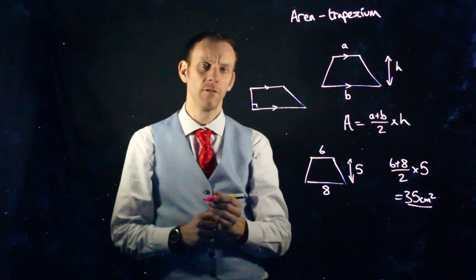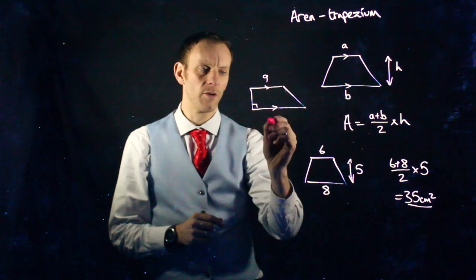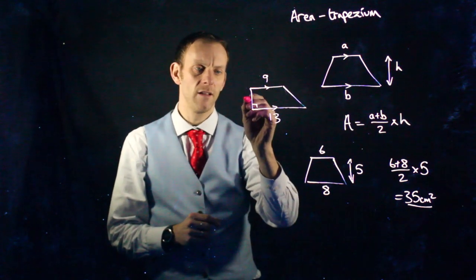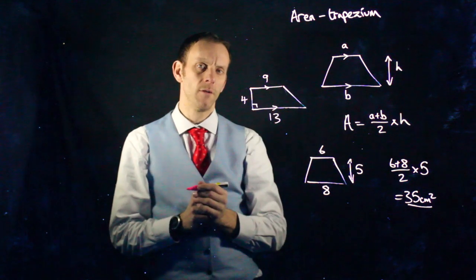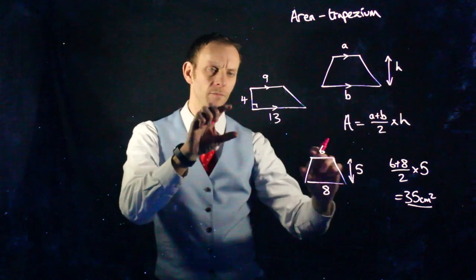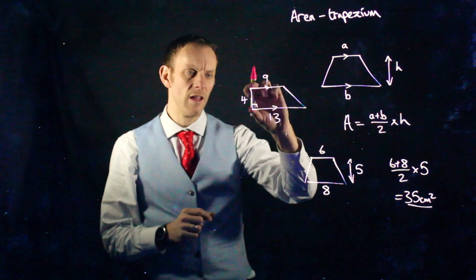It still has one pair of parallel sides. We have the top, let's call this one 9, and this one 13. If this is the height of 4, it might not have the arrow. We saw this with triangles before. It's still the height.